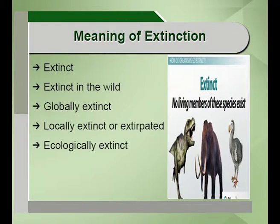One more category which conservationists predict is ecological extinction. Ecologically extinct species are those which, due to their smaller numbers, have a decreased role in the community. For example, the tiger is a top carnivore, but because of the decrease in its numbers, its role in the ecosystem is minimized. All these categories have been given to enhance conservation of species which are either extinct, locally extinct, or ecologically extinct, so that conservation management practices can be applied.